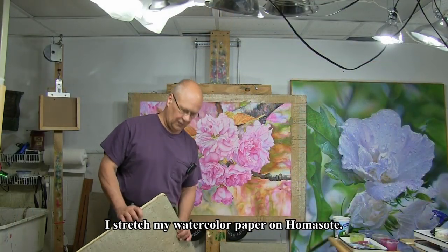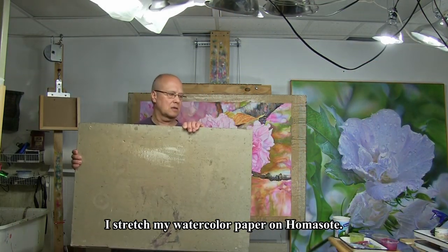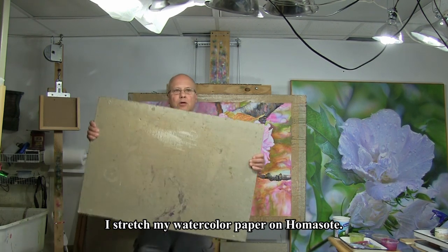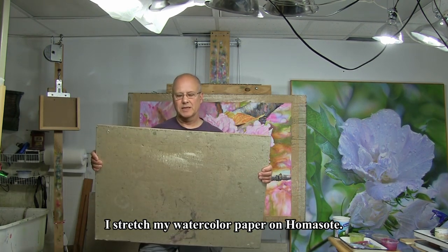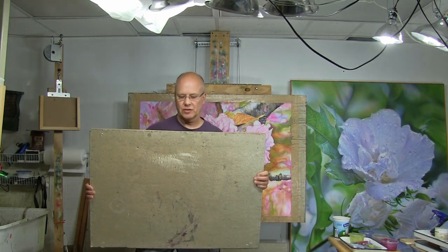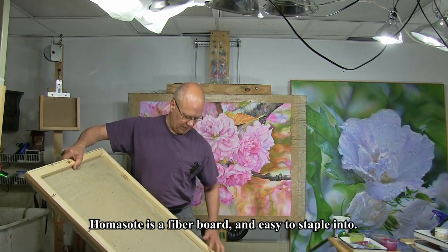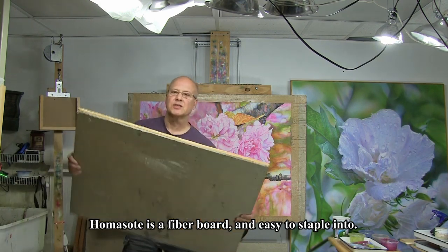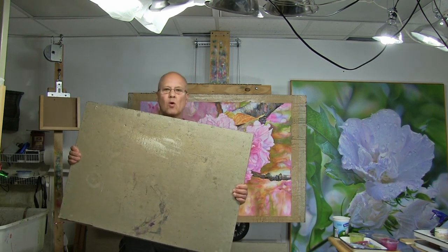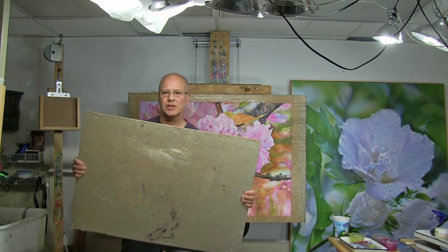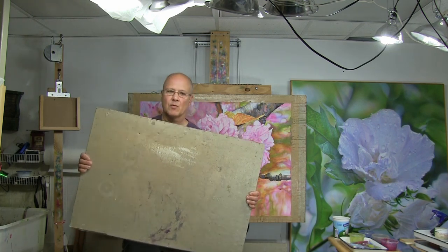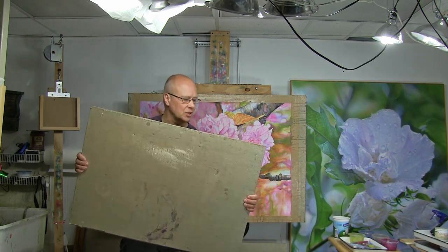Here's a piece of homosote cut for mounting watercolor paintings that are about 22 by 30, full sheet. And the homosote is reinforced on the back with a frame that I make. This prevents the whole homosote from warping as the paper shrinks from the wetting process that is used in stretching it.